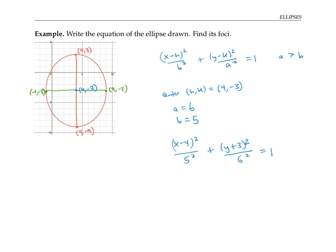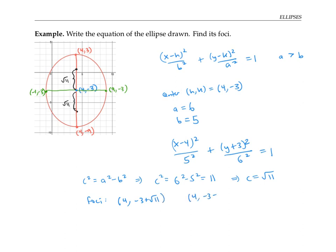The foci lie along the major axis, above and below the center. Using c² = a² − b² = 36 − 25 = 11, we get c = √11, which is a little bigger than 3. So the two foci are at distance √11 above and below the center, giving coordinates (4, −3 + √11) and (4, −3 − √11).